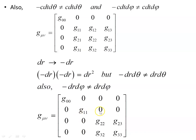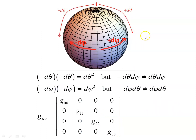Those terms — g₁₂, g₁₃, and their symmetric counterparts — vanish as well. Now looking at rotational invariance: minus dθ times minus dθ gives dθ², but minus dθ·dφ does not equal dθ·dφ. Similarly, minus dφ·dφ gives dφ², but minus dφ·dθ does not equal dφ·dθ. So these remaining off-diagonal angular cross terms are also ruled out. The only terms yet to be determined are the diagonal ones — just by symmetry arguments we've been able to rule out all cross terms.